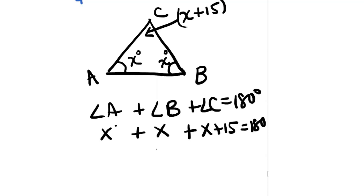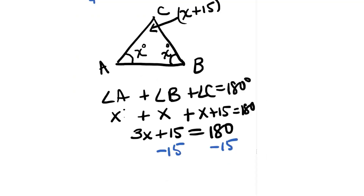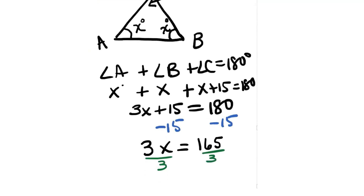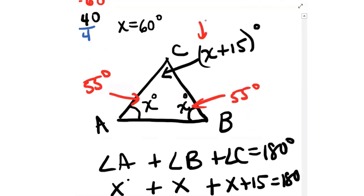Combining like terms on the left gives us 3x plus 15 equals 180. We subtract 15 from both sides to get 3x equals 165, then divide by 3, and x equals 55. So angles A and B are both 55 degrees. And to find angle C, we add 55 and 15 to get 70 degrees.